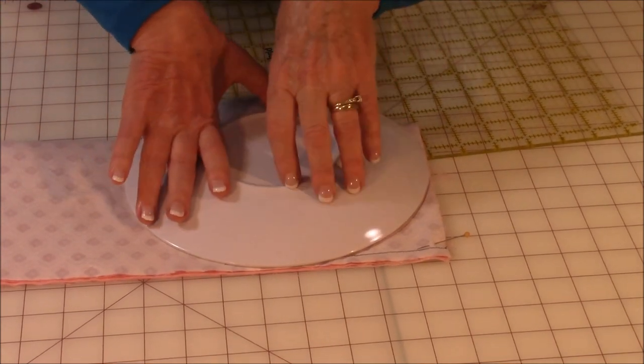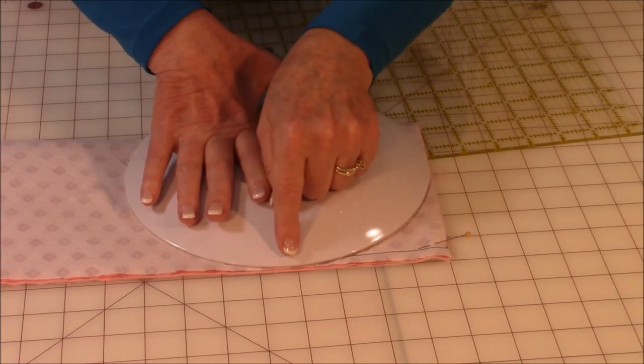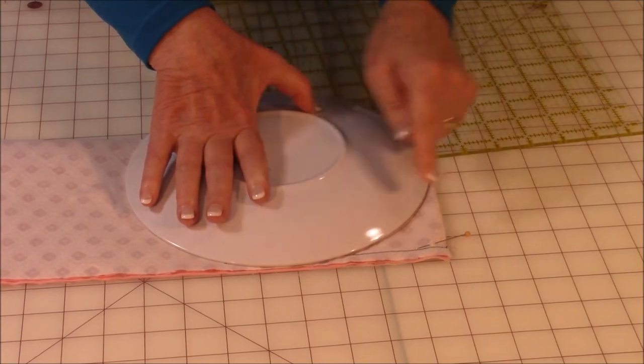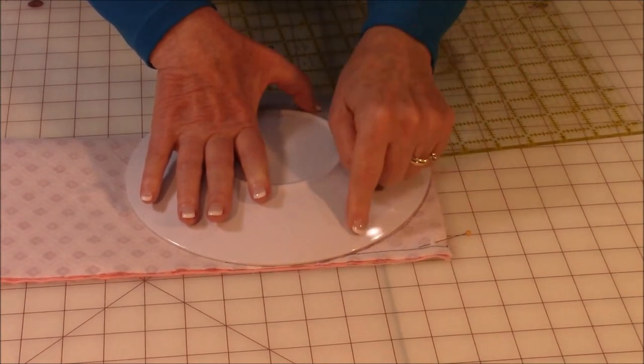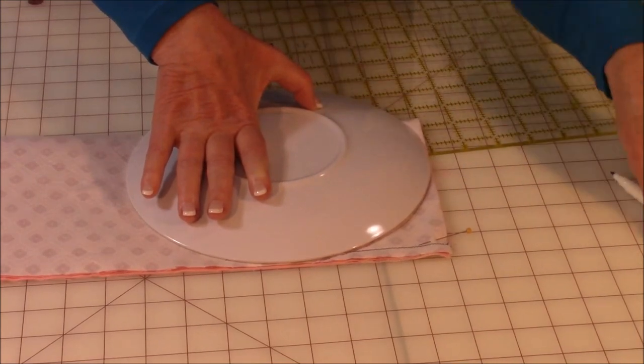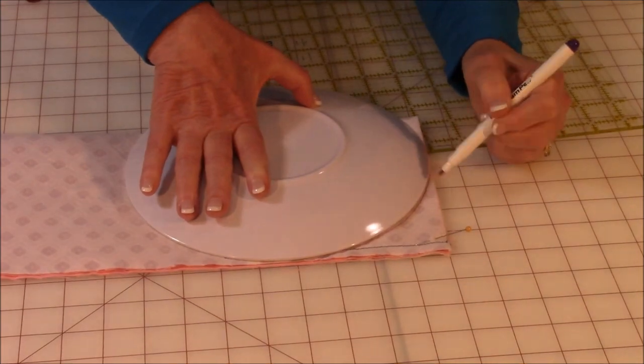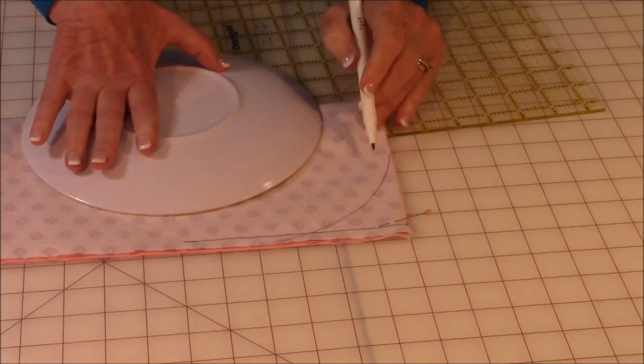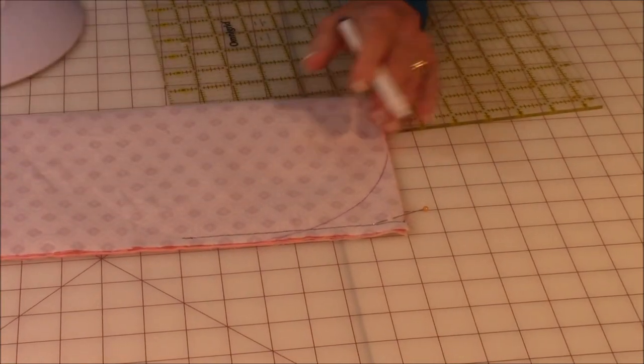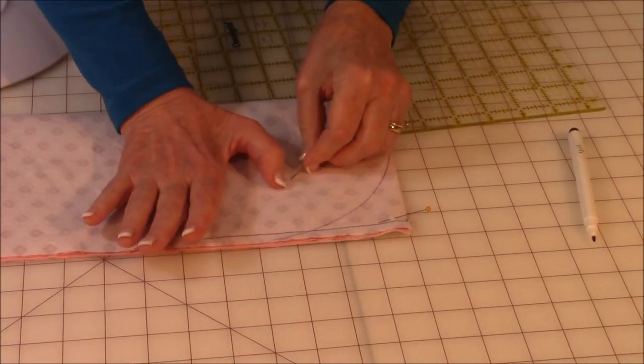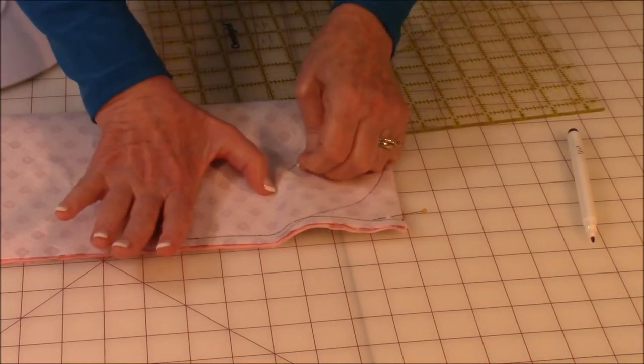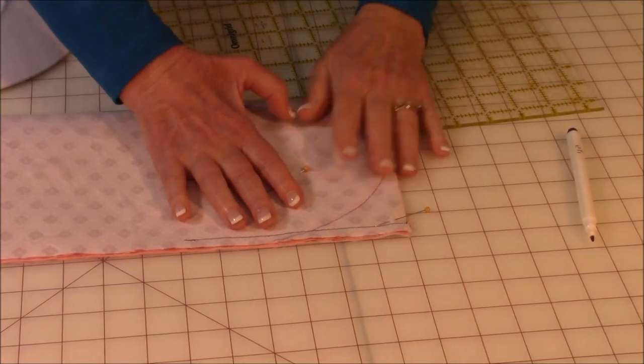Now you're going to turn the plate upside down and you're going to line the plate edge with the raw edges on both sides here. Then you're going to take a fabric marking pen and draw a line around there like I've already done here. See that line? Another thing you would want to do is after you've drawn the line, put one more pin here to hold it so your fabric does not shift.